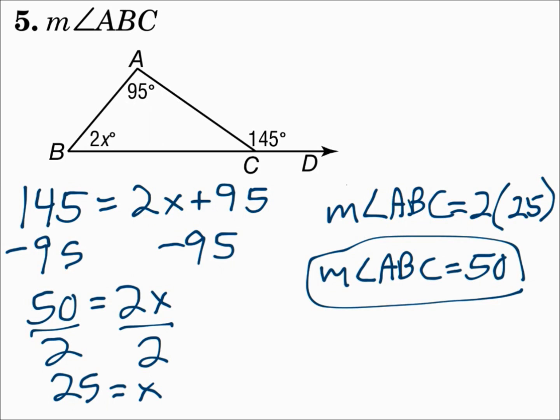Remember: the triangle angle sum theorem says the three angles of a triangle add up to 180, so if you know two angles, it's easy to find the third. For the exterior angle theorem, the exterior angle is the sum of the remote interior angles. Use these rules to find the measures of the angles of a triangle.